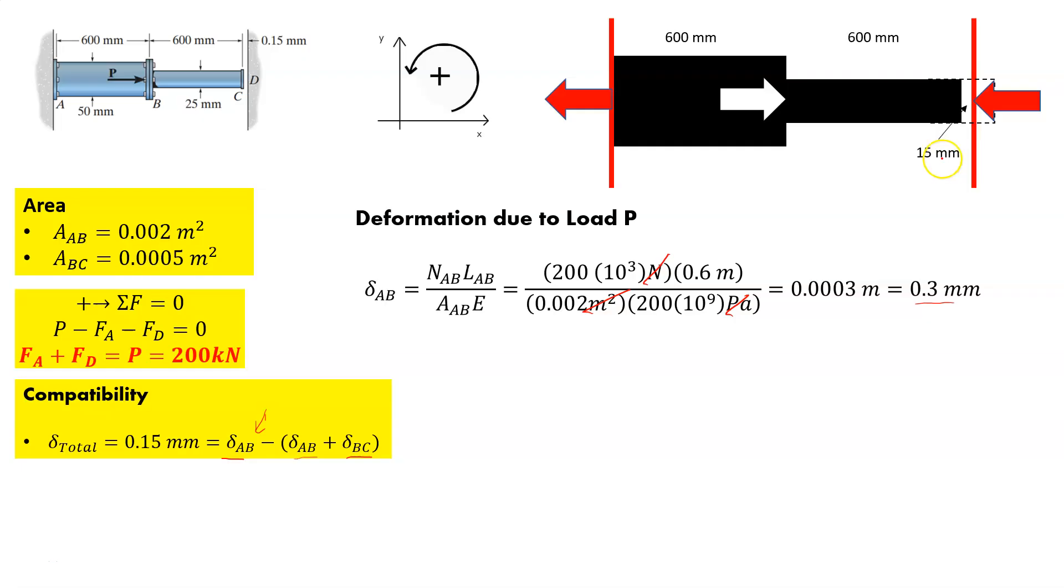So as you can see, if just on that load alone, that 200 kilonewtons load, you're moving, you would normally displace this twice as much as that gap. You'd go 0.15 millimeters and then without that wall there, you would actually take it out to 0.3 millimeters. So the wall is stopping what's going on and that means that AB is going to get a bigger reaction because of that.